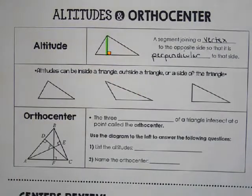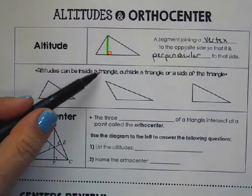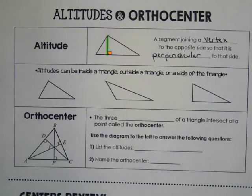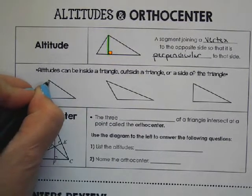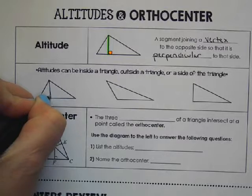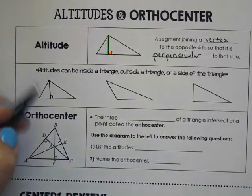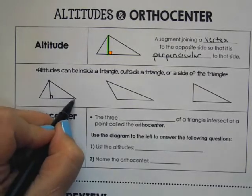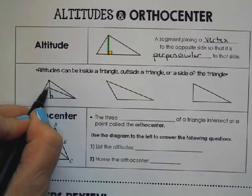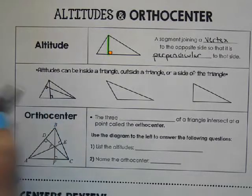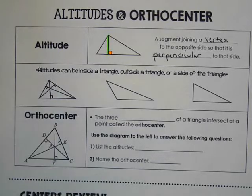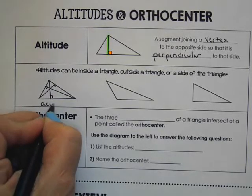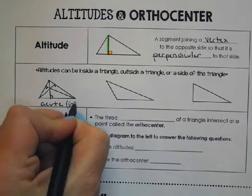Now, altitudes, since they have to be drawn perpendicular, they might be inside a triangle, they might actually be a side of the triangle, or they could be outside. So if we look at this acute triangle, if you go from the vertex perpendicular to the opposite side, all those altitudes would stay inside the triangle, like so. And that's just a sketch. This is an acute triangle. So they're inside.